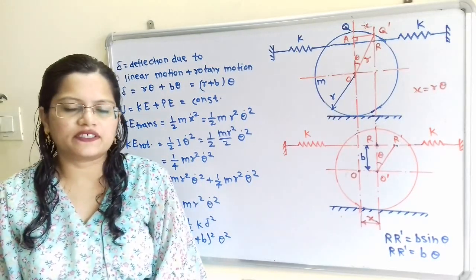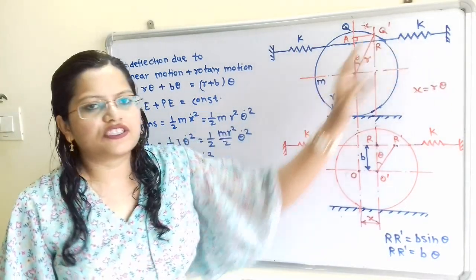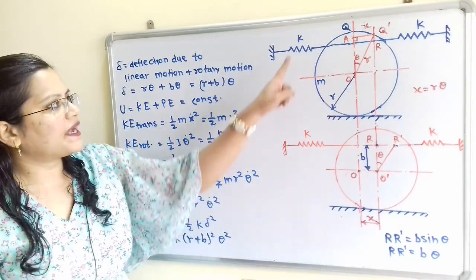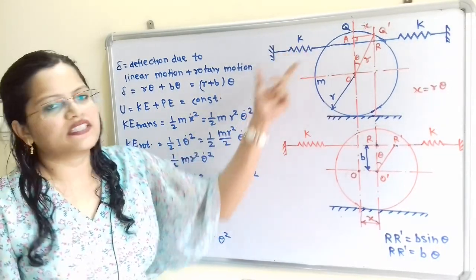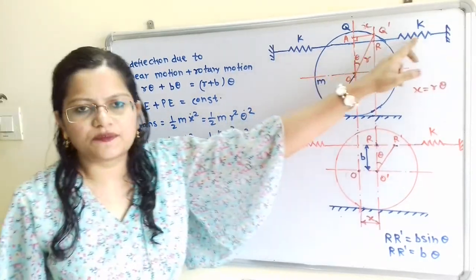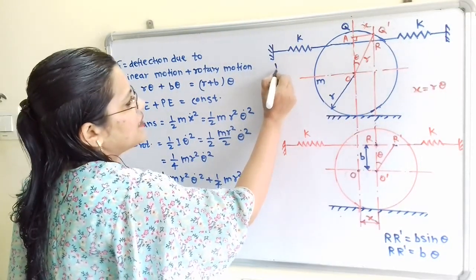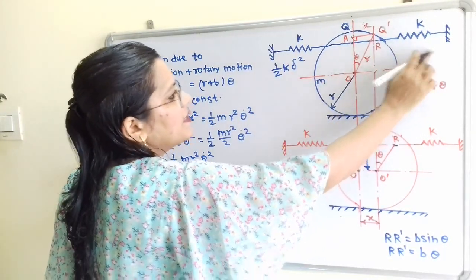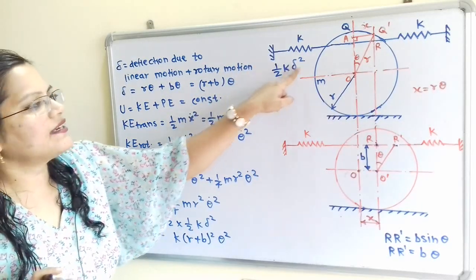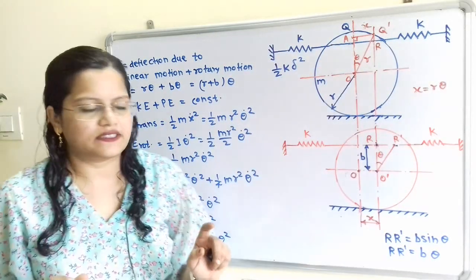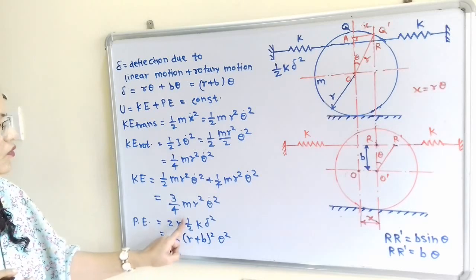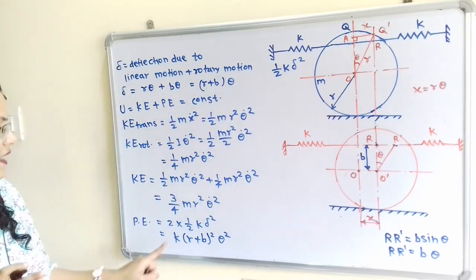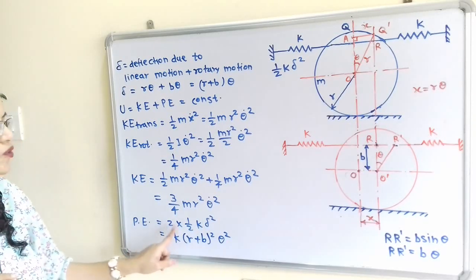Potential energy is due to the energy stored in the springs. For each spring, PE = (1/2)·k·delta². Since there are two springs, total PE = 2·(1/2)·k·delta² = k·delta². Substituting delta = (R + B)·theta, potential energy becomes k·(R + B)²·theta².